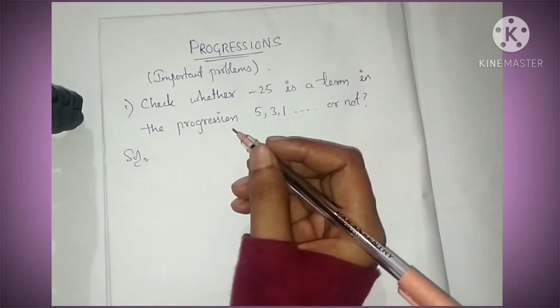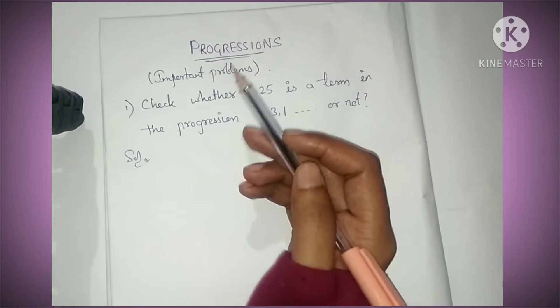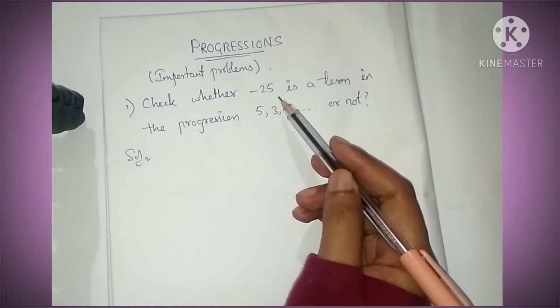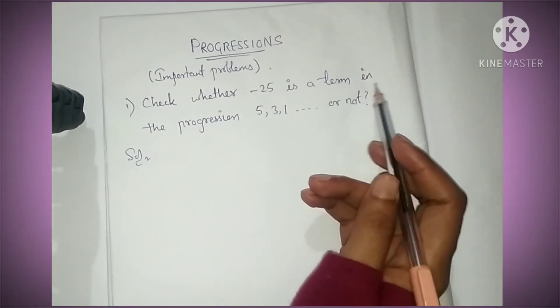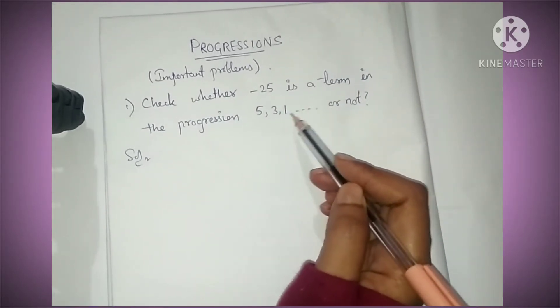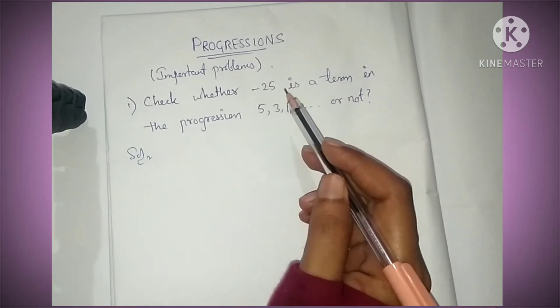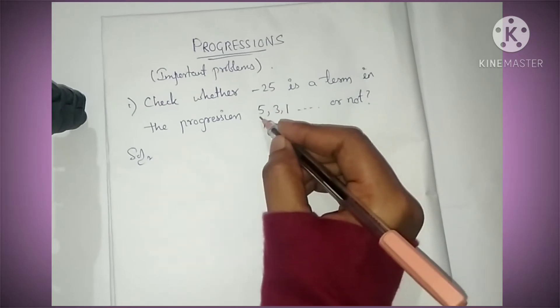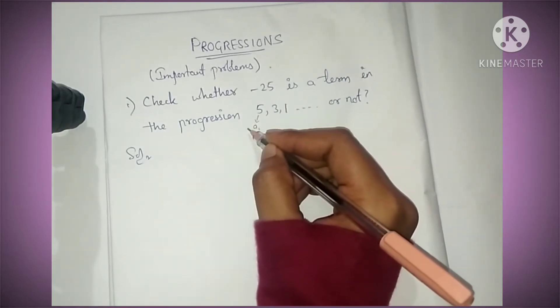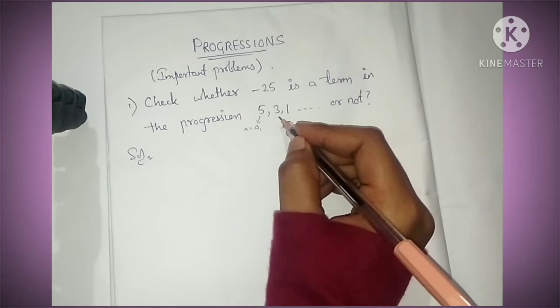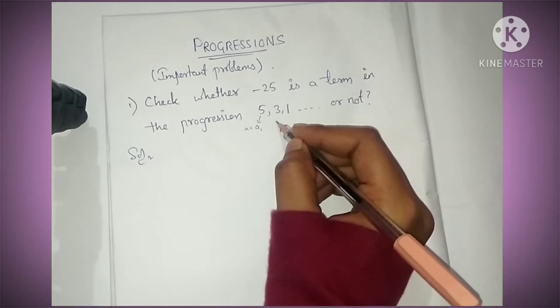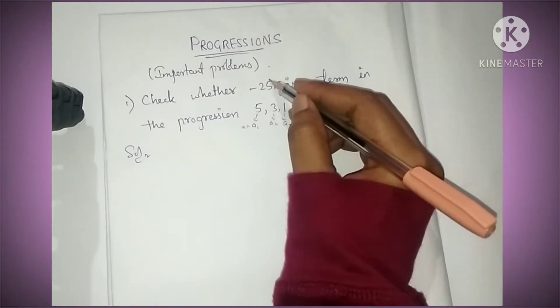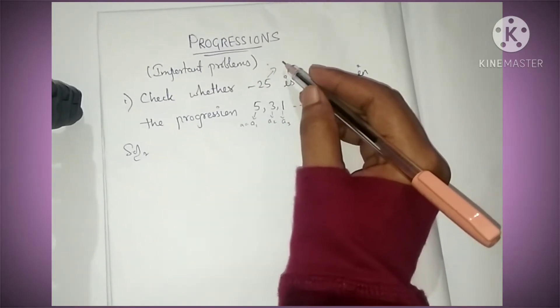Hi everyone, welcome back to my channel. Today we are going to solve a problem from progressions to check whether -25 is a term in the progression 5, 3, 1 or not. Here we have to find which term this is. The first term a is 5, second term a2 is 3, and a3 is 1.